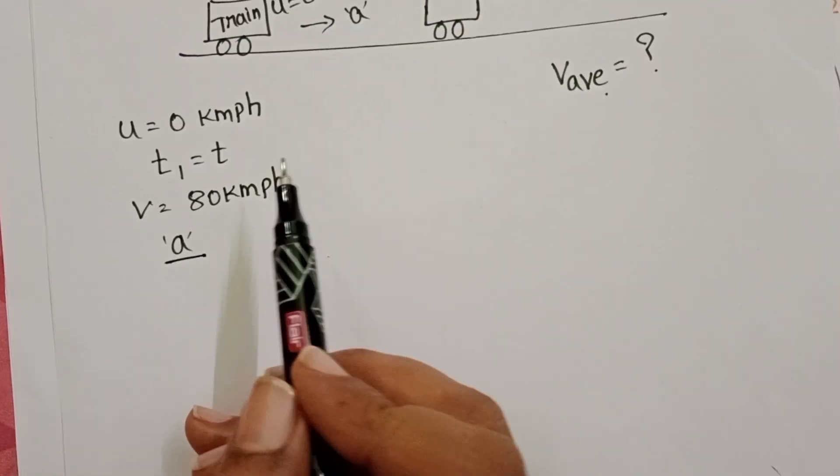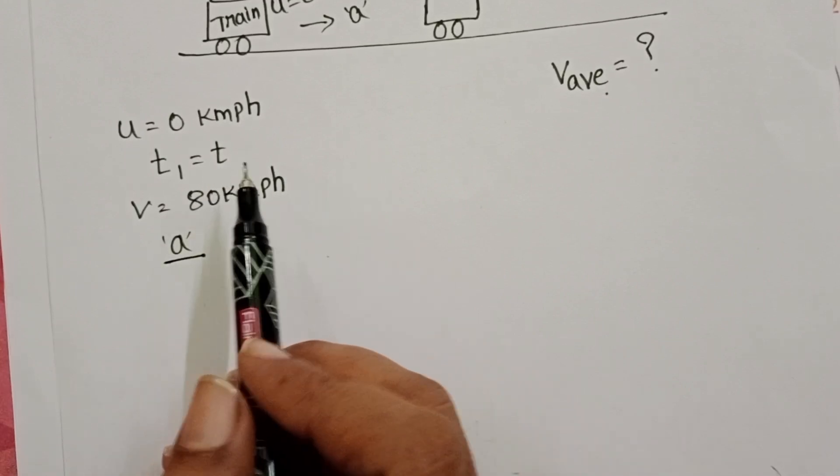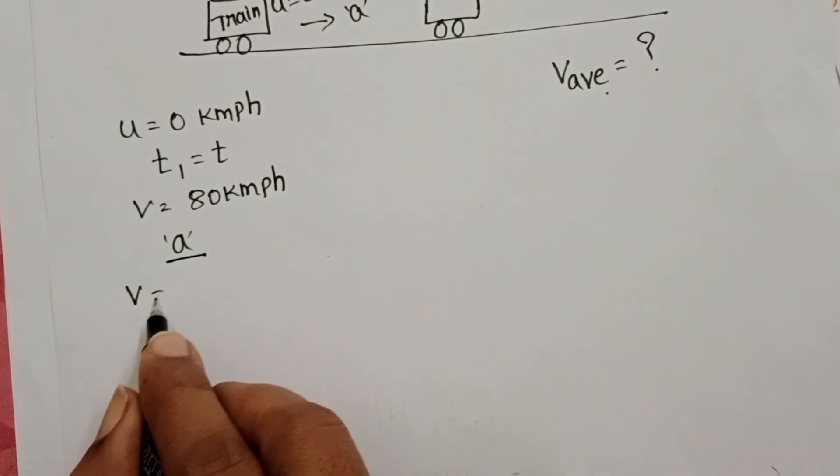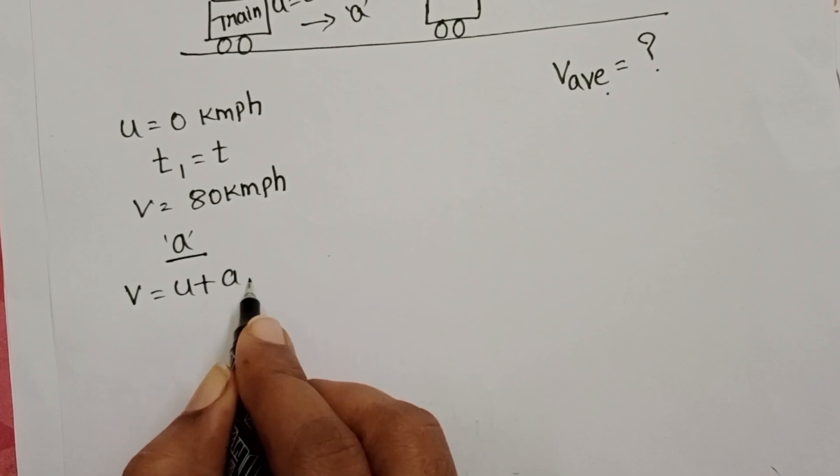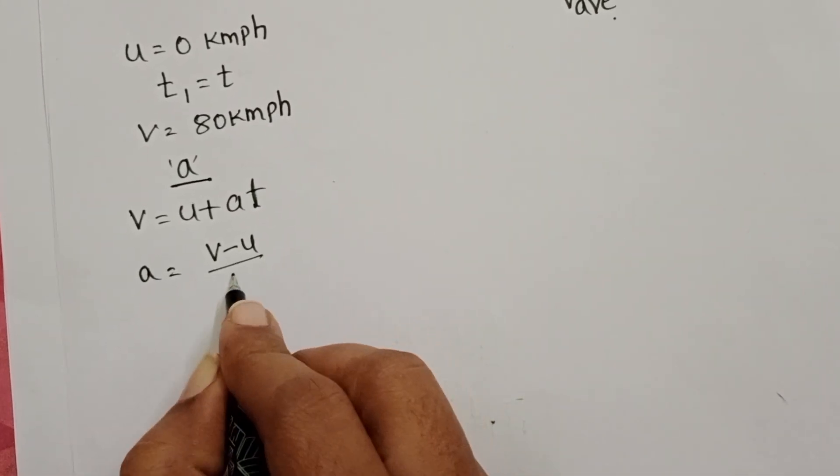Here train is moving with uniform acceleration in first part. So, take the equations of motion. V is equals to U plus AT. From this, A is equals to V minus U by T.